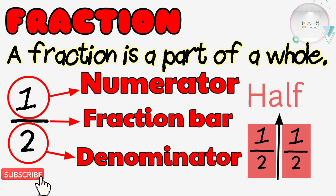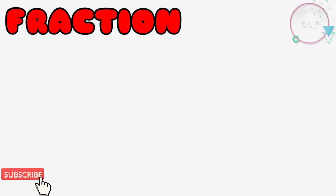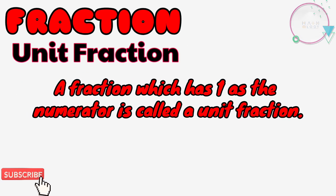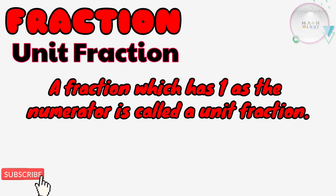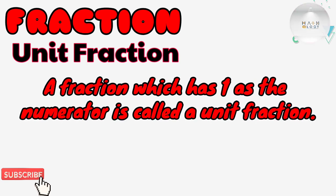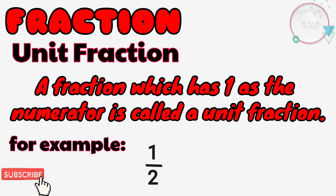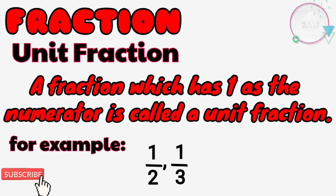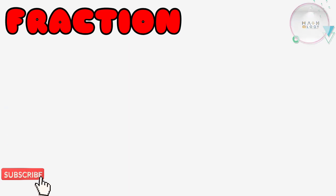What is a unit fraction? A fraction which has one as the numerator is called a unit fraction. For example: 1/2, 1/3, 1/8. When two or more fractions are given, depending on the value of their denominator, they can be formed as like or unlike fractions.